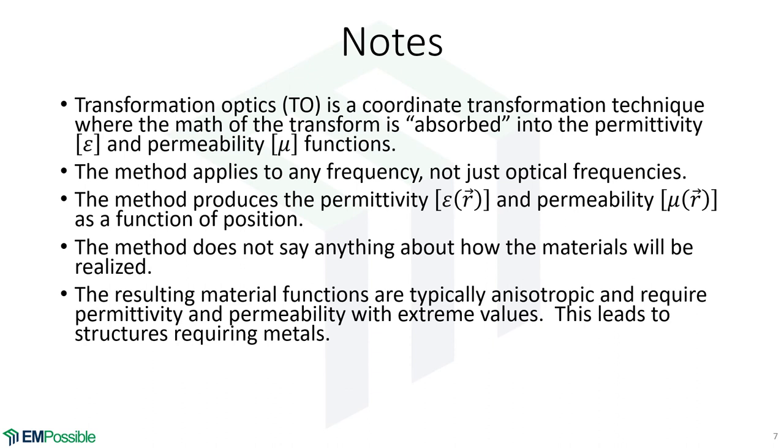Typically what we get, typically we'll start transformation optics with vacuum of space, although that's not necessary. We'll typically get permeability and permittivity that are anisotropic. They have extreme values. That means values close to zero, values approaching infinity, things like that. This really dictates that we use metamaterials and we need metals for that. It's going to be very difficult to do transformation optic devices without metals. Now there's a lot of work going into transformation optics to try to ease this so we can make things that are dielectric only, don't require permeability, or that are not anisotropic, or that don't have such extreme values.